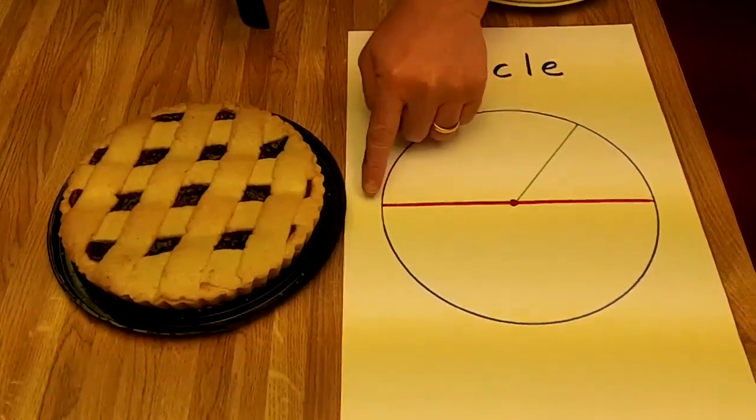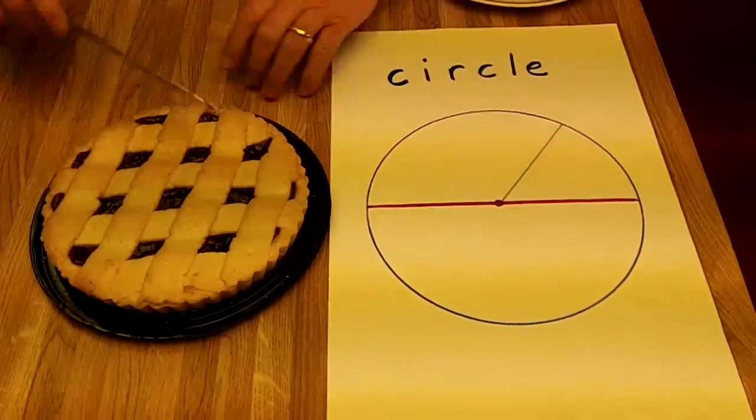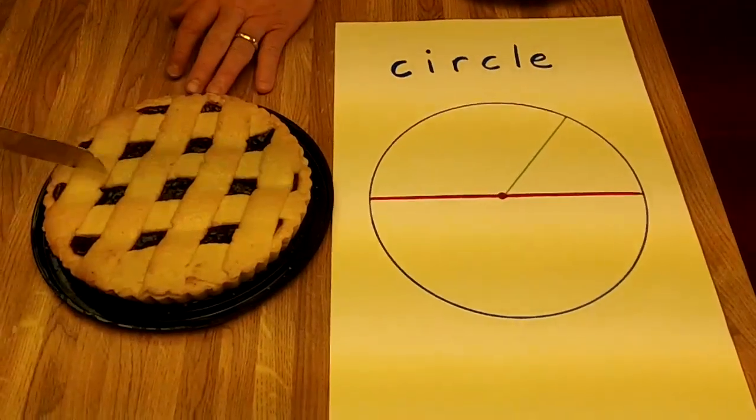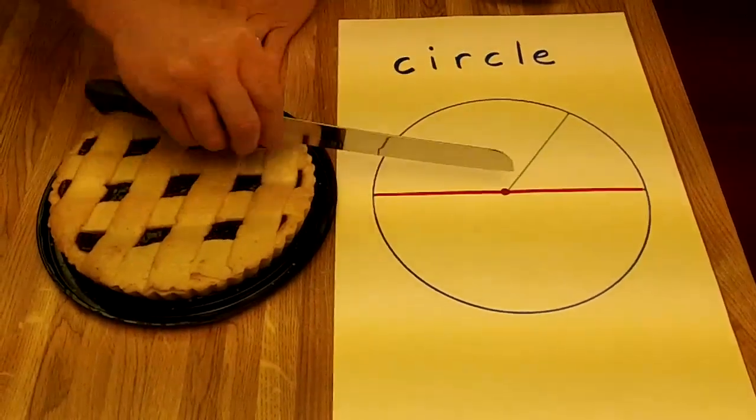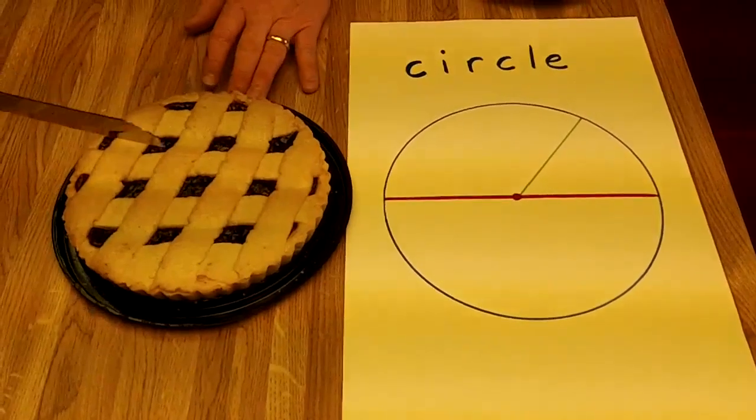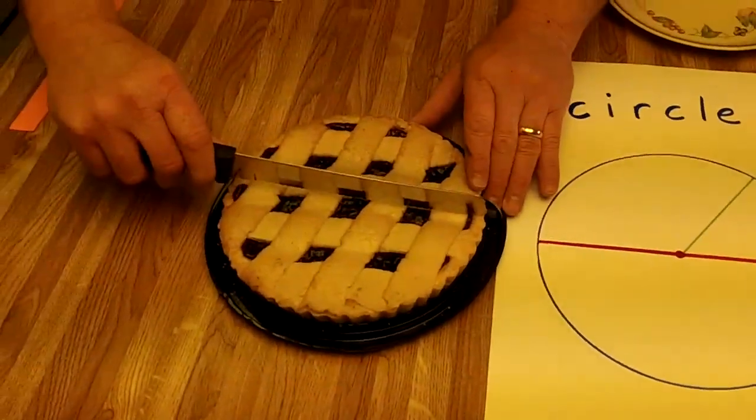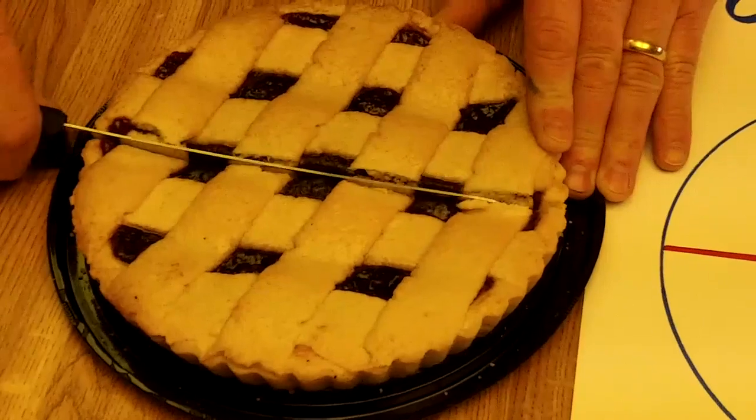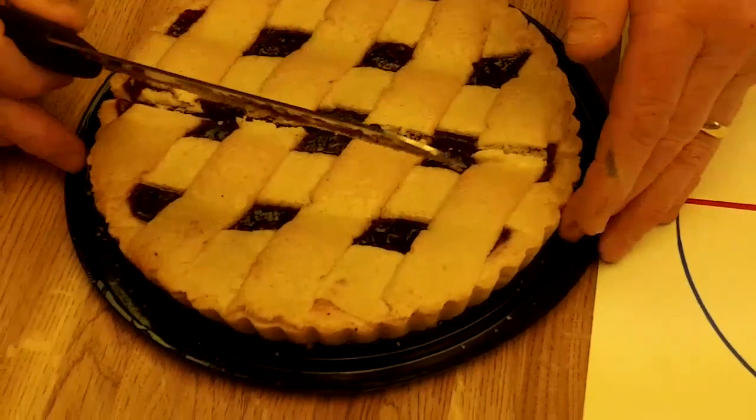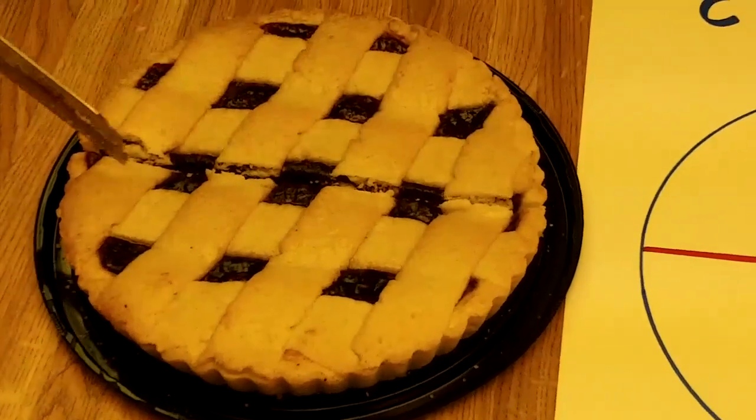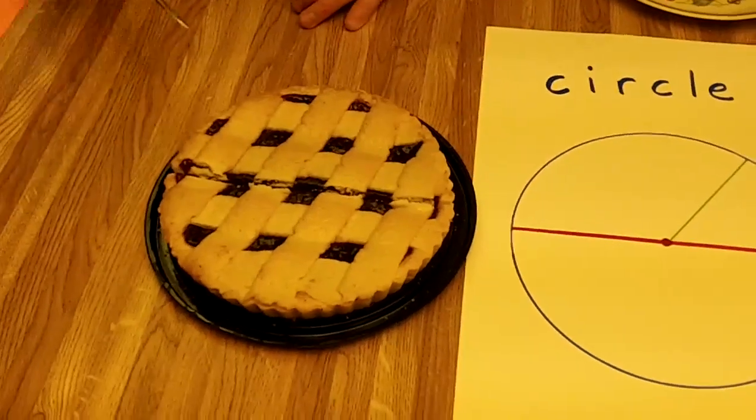Now, this red line going straight through the center from one side to the other, that's called the diameter. So, if I made a cut from one side to the other, that is the diameter that goes across.